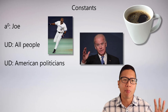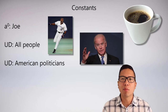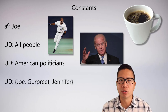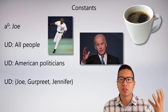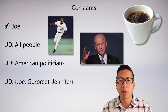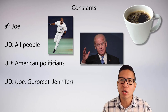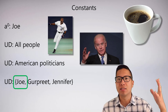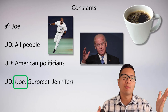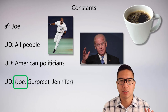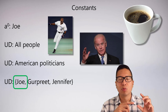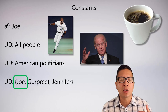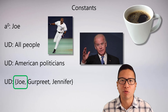With extensional interpretations, since the UD is defined set-theoretically, it's crystal clear. If the UD is {Joe, Gurpreet, Jennifer}, and a₀ is Joe, then it's unambiguous which Joe I mean. If there are multiple Joes, I use subscripts like Joe₁, Joe₂. The most important thing: a constant must pick out something from the universe of discourse.